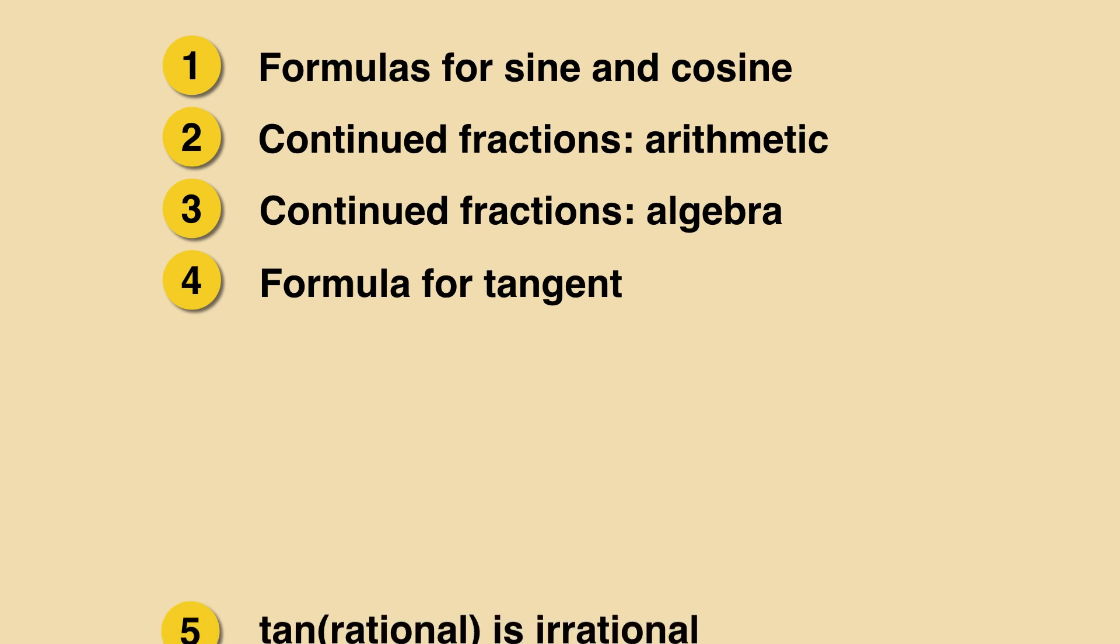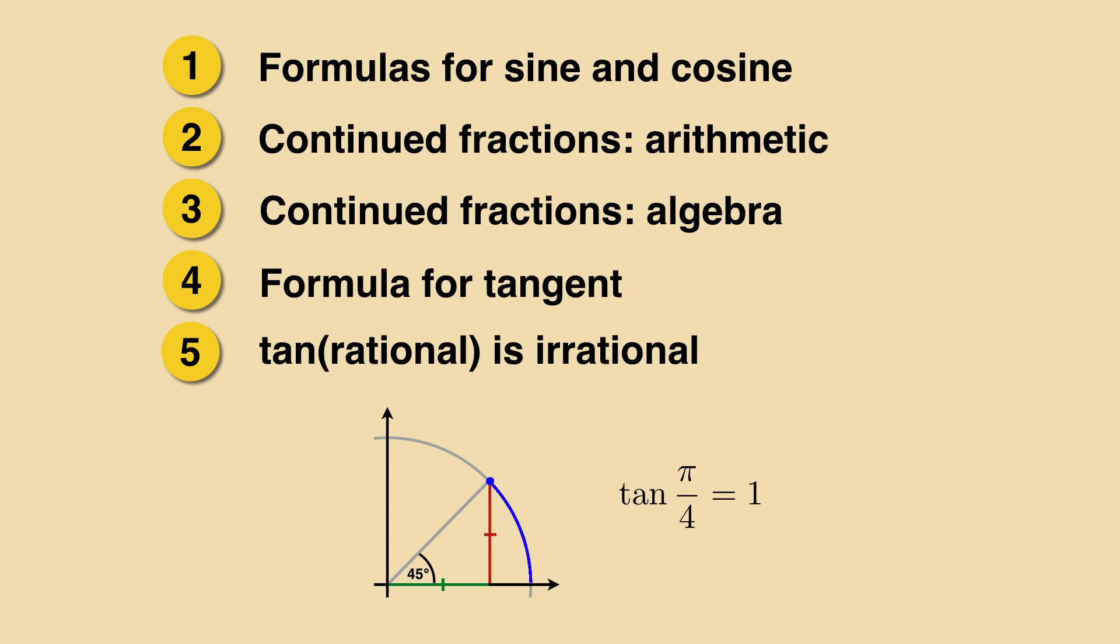Finally, the condition for irrationality from step 2 will apply and thus the tangent of a rational number is irrational. Since the tangent of pi over 4 equals 1, pi cannot be rational.